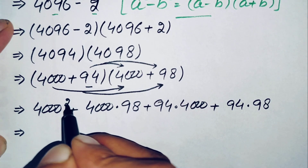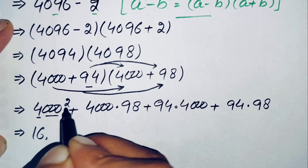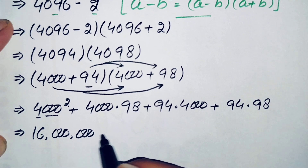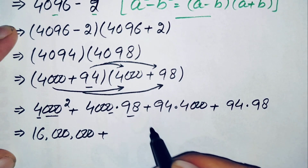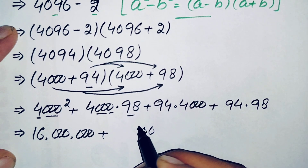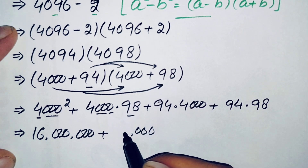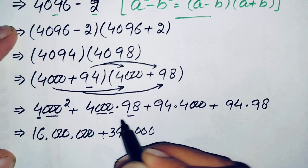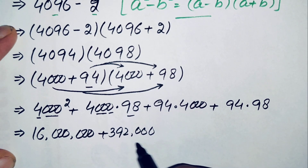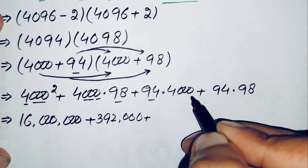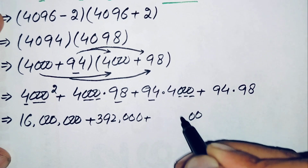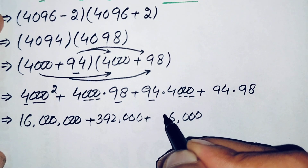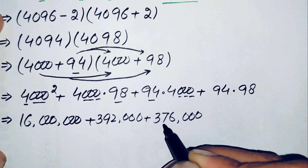4000 squared equals 16 million, since 4 squared is 16 and squaring three zeros gives six zeros. Then 4000 times 98: 98 times 4 is 392, so 4000 times 98 equals 392,000. And 94 times 4000: 94 times 4 is 376, so that gives 376,000.